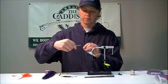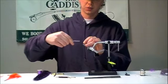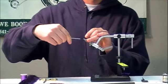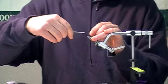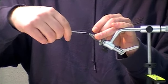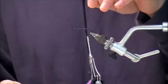So we're going to start the thread behind the eye, make a nice thread base all the way down the hook shank, and take that thread to approximately the barb.